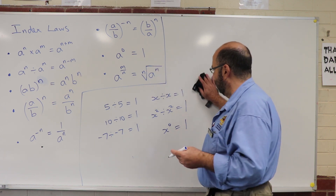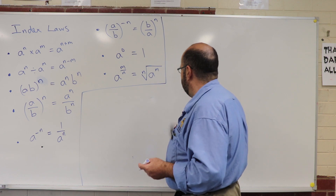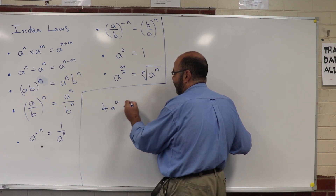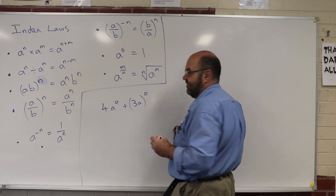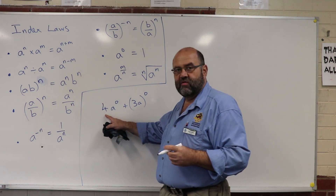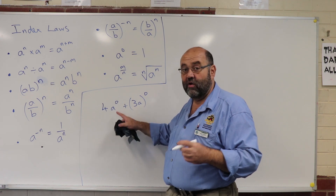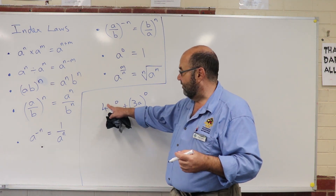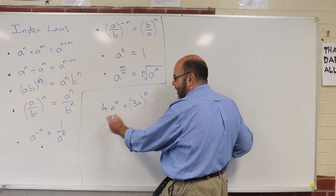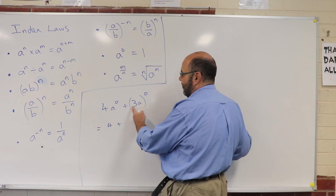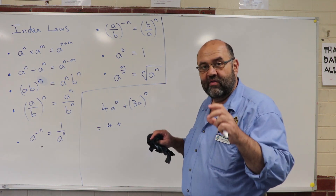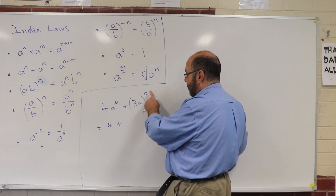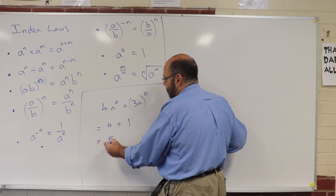Let me show you an example. If I ask you to simplify 4a to the power of 0 plus (3a) all to the power of 0 — what's got a power of 0? The a has got a power of 0, so that's 1. The 4 does not have a power of 0 — the 4 has got a power of 1. So this says 4 times 1 is 4. Now this set of brackets is to the power of 0 — anything to the power of 0 is 1. So that whole thing equals 5.